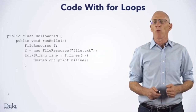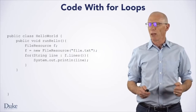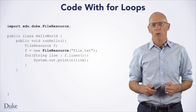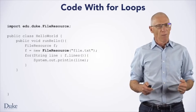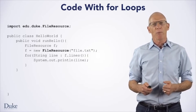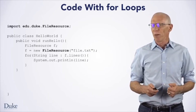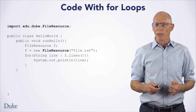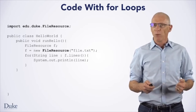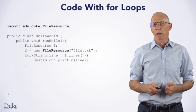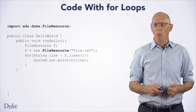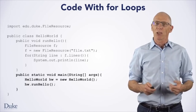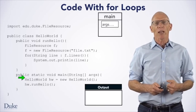Hi. Now we're going to learn how a for-each loop works. This piece of code looks similar to the Hello World example that you started with earlier. To make this work, we need to add an import statement to the top to tell Java where to find the FileResource class. FileResource is in a package that we provide to you to let you manipulate data in files before you learn the more advanced techniques that would let you do this in Java directly without the classes we've created. Accordingly, this is found in the edu.duke package. If you want to run this code in BlueJ, you could do so by creating a HelloWorld object and then invoking its runHello method. Let's start executing the code by hand.